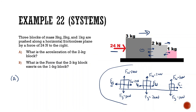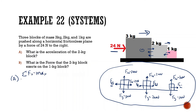Now looking for acceleration, we examine the whole system. Sum of all forces in x equals mass times acceleration: negative F2-on-3 plus Fa minus F1-on-2 plus F3-on-2 plus F2-on-1 equals M3 plus M2 plus M1 times acceleration.